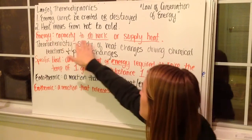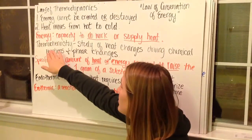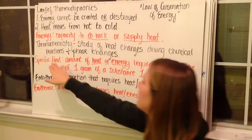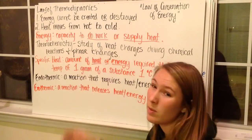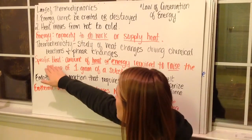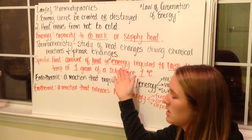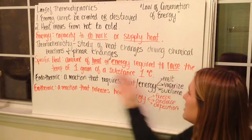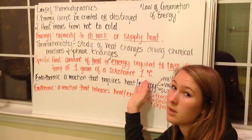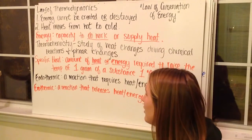Energy is the capacity to do work or supply heat. Thermal chemistry is the study of heat changes driving chemical reactions and phase changes — that's how we look at and see what is changing. Then we have specific heat, which is the amount of heat or energy required to raise the temperature of one gram of a substance one degree Celsius. It doesn't matter what substance — we're just going to move one gram of it up one degree.